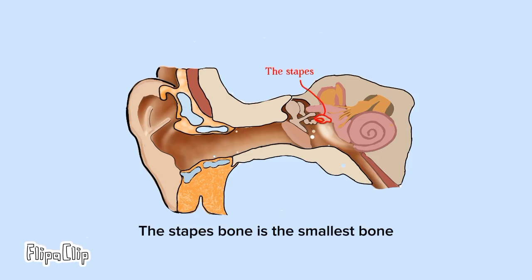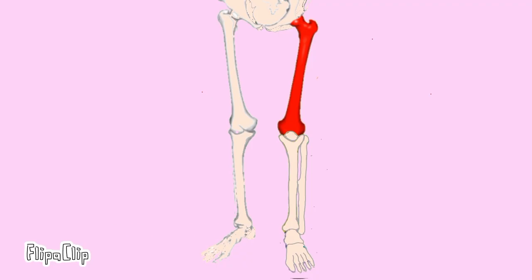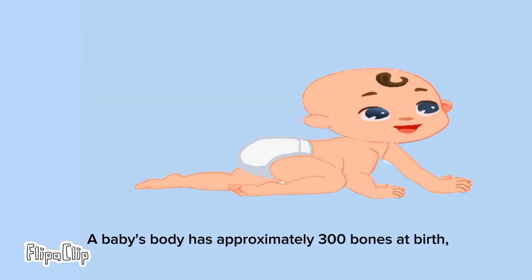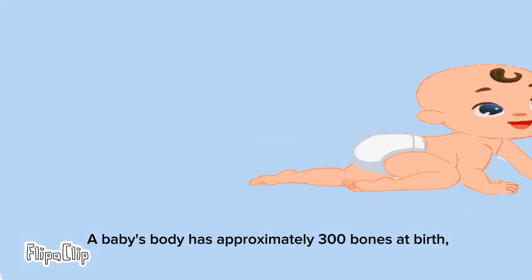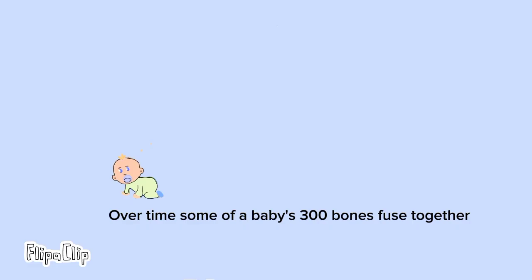The stapes bone is the smallest bone — this bone is found in the ear. The femur is the largest bone, it's in your leg. A baby's body has approximately 300 bones at birth, whereas an adult's body has 206 bones.